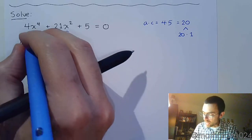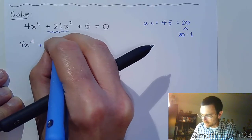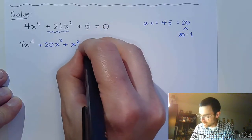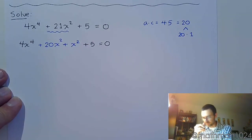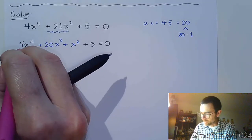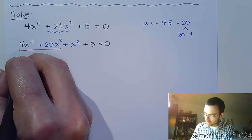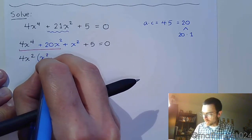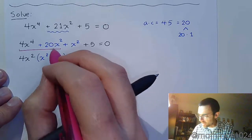So I'm going to use those numbers to split up that middle term so it looks like this: 4x⁴, getting the right sign since everything here is positive, that's going to be plus 20x² plus 1x² plus 5 = 0. So then it gets to the factoring by grouping part of the problem. The common factor here is 4x².